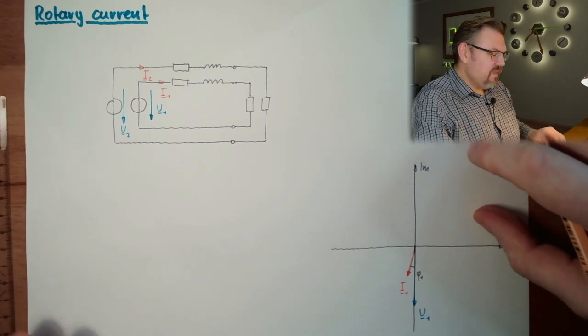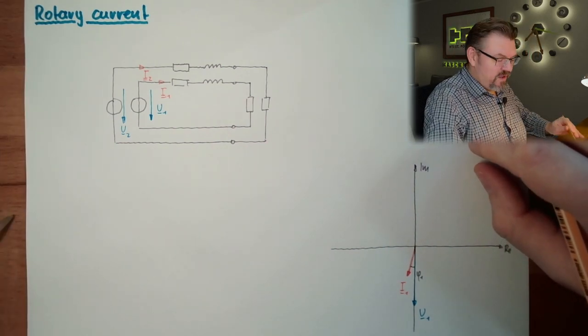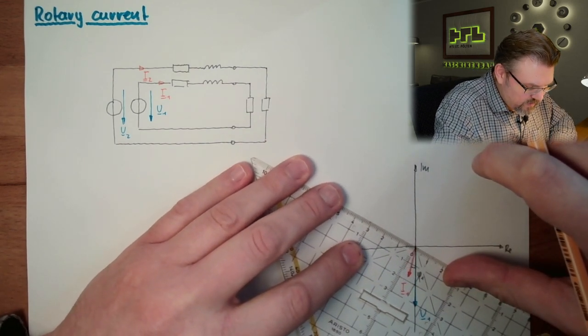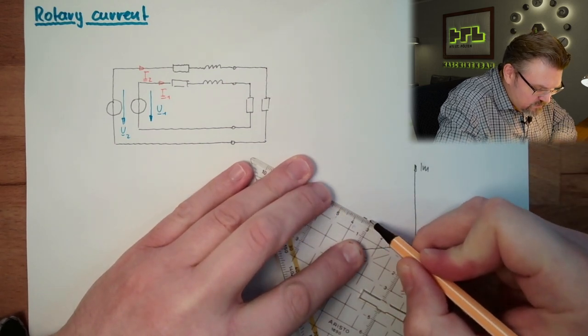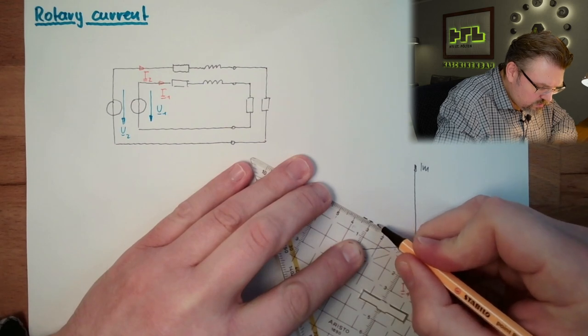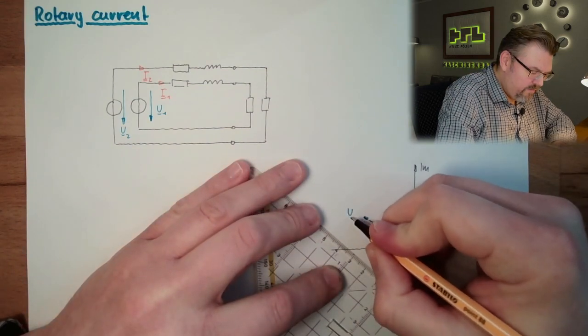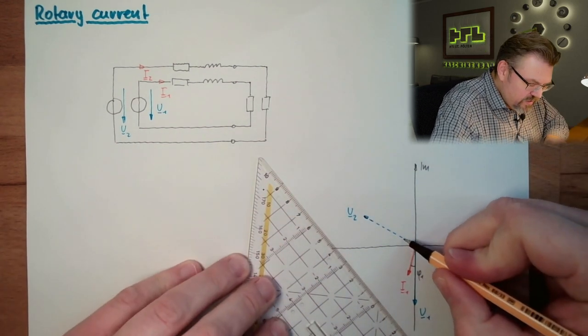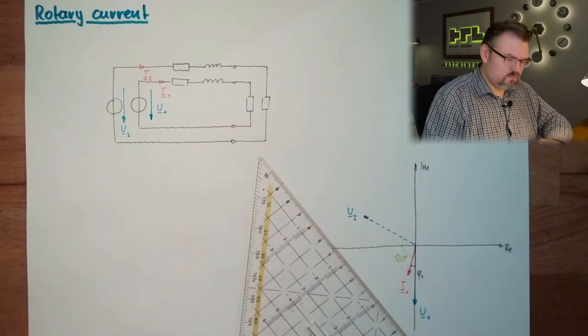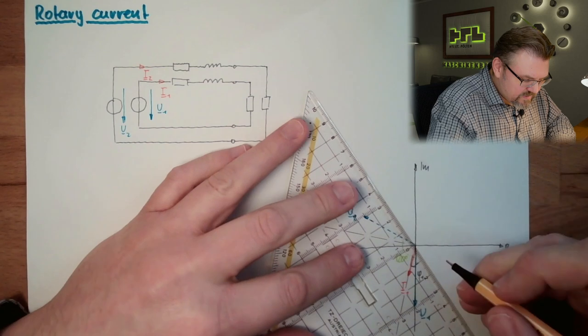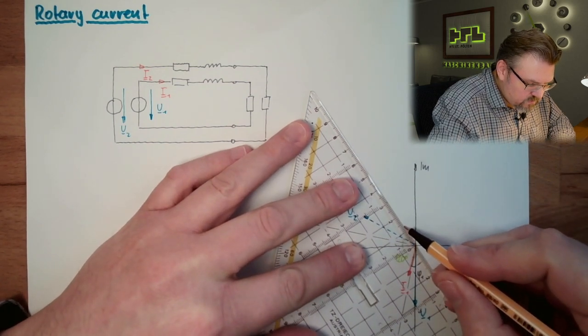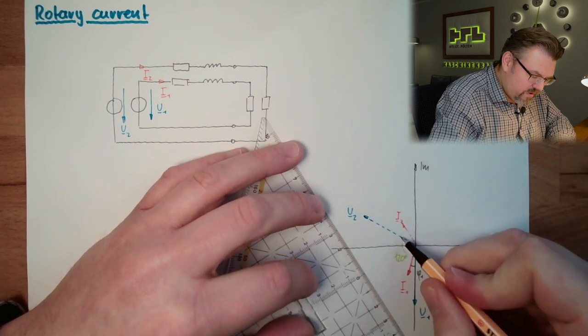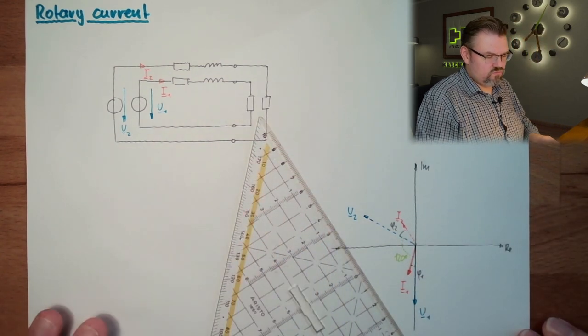So we have a second AC system, and the thing is that the second voltage has a phase shift of 120 degrees. If I draw in here now 120 degrees, it has the same length. Here we have our U2, 120 degree phase shift in between. And we have of course a second current, here we have I2, here we have a phase φ2.